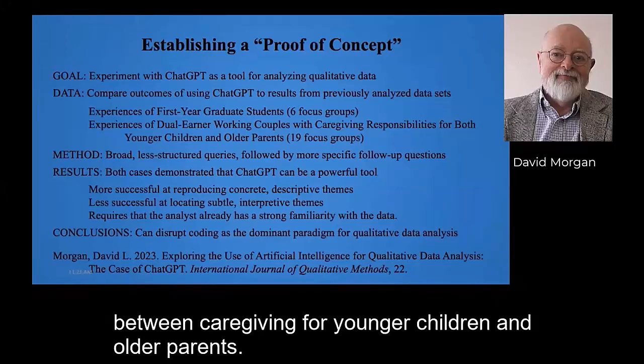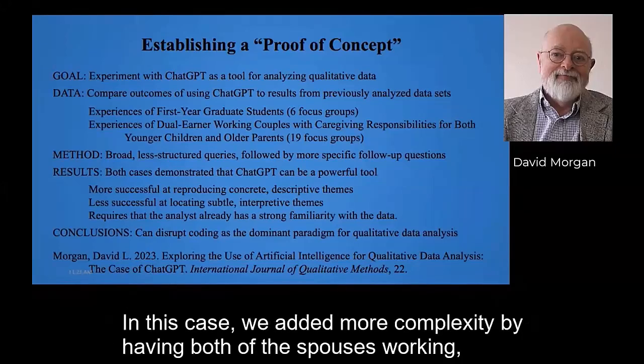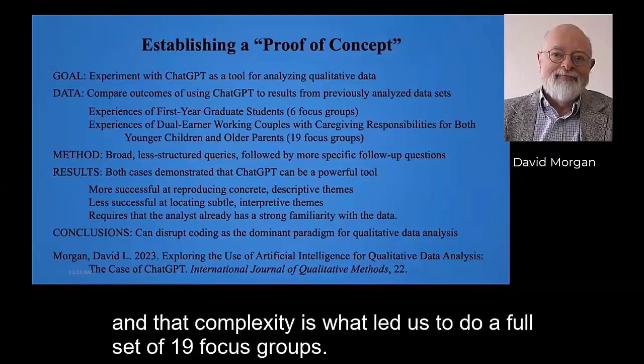The second study used 19 focus groups to look at dual-earner working couples with caregiving responsibilities for both younger children and older parents — what we sometimes call the sandwich generation in the US. The added complexity of both spouses working is what led us to conduct a full set of 19 focus groups.